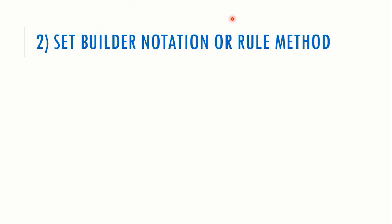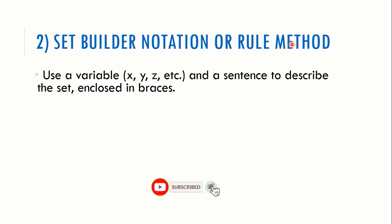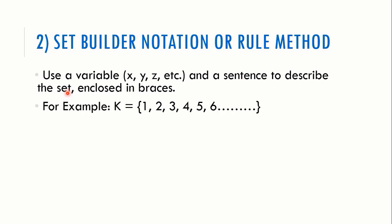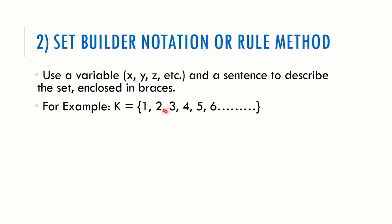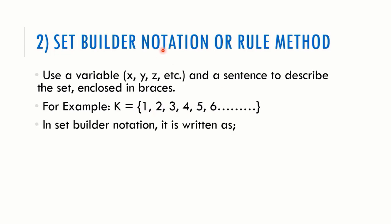The second method is set builder notation, also called the rule method — because it is written just like a rule. In this method we use variables such as x, y, z, a, b, c, etc., and a sentence to describe the set. For example, consider a set written in roster method, enclosed within curly brackets and separated by commas. Now let's write this set in set builder notation.